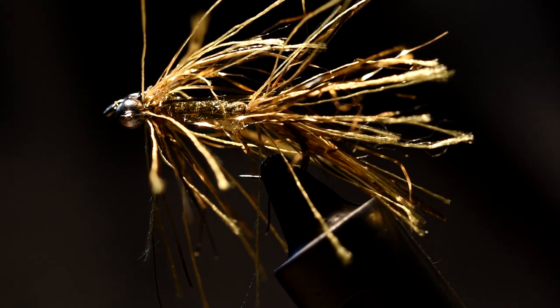For the body I use ice tube gold hairline. You'll need some gold wire, bead chain eyes, super glue, and your thread. I use nano silk. So let's go on and tie.